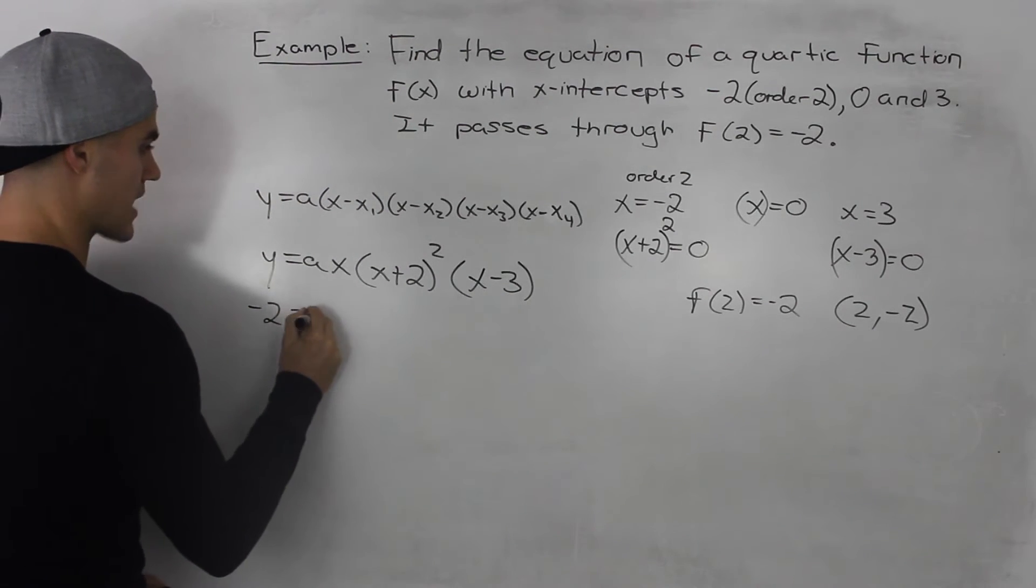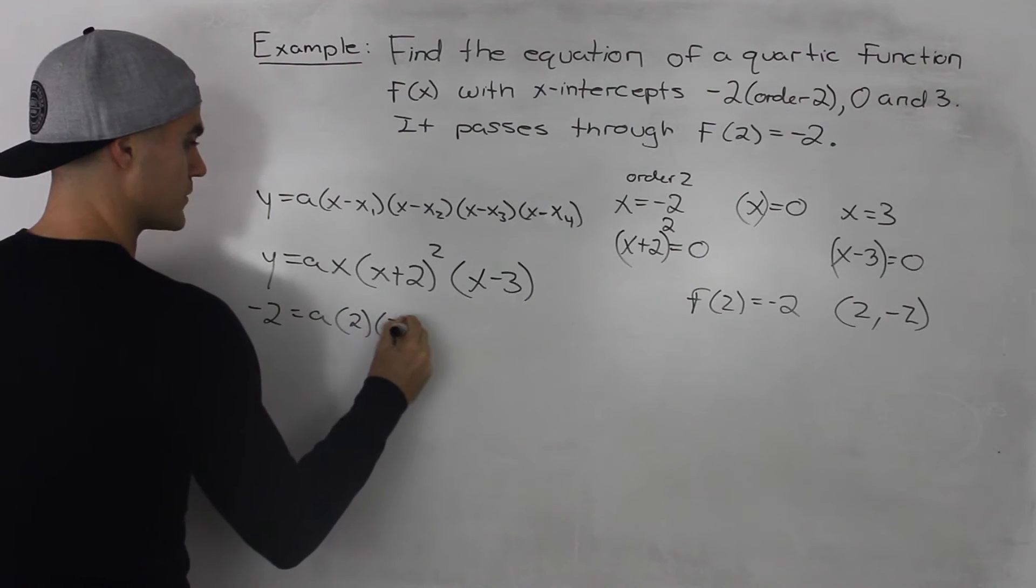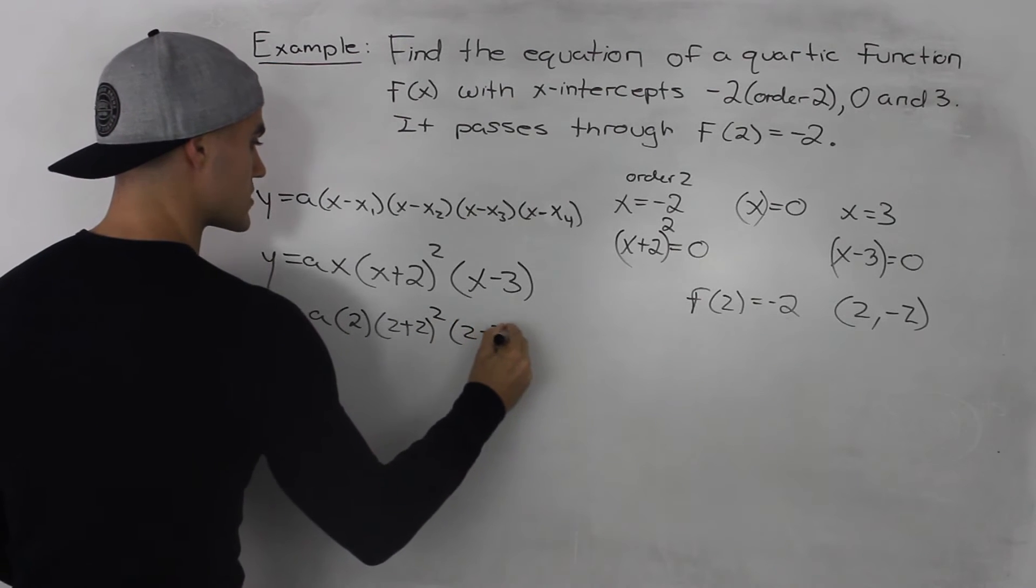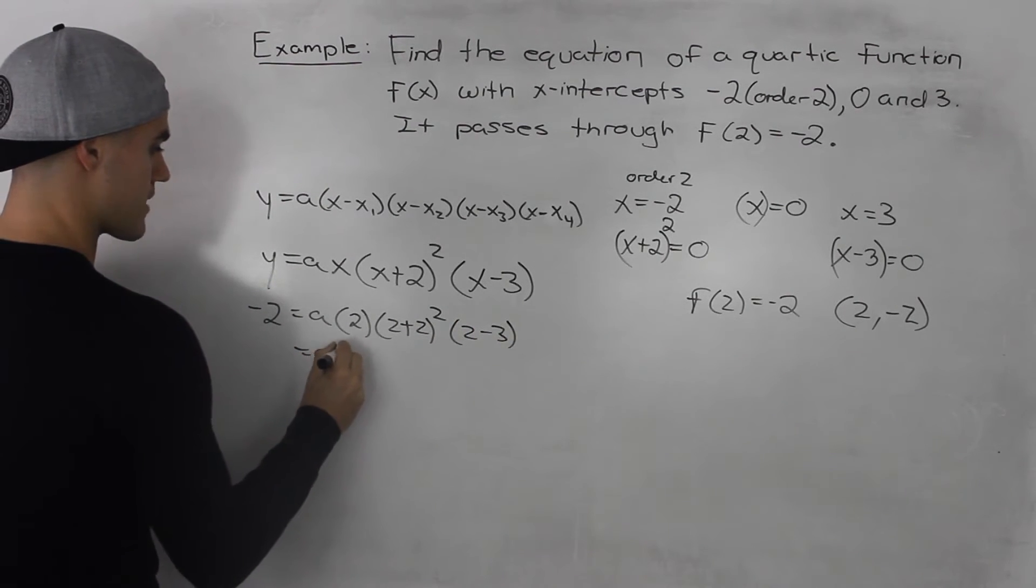So -2 = a, here we'll have 2, here we'll have (2 + 2)², and here we'll have (2 - 3). So this will be a times 2,